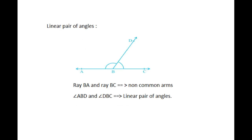Linear pair of angles: two angles form a linear pair if they have a common arm, a common vertex, their interiors do not overlap, and the sum of the two angles is 180 degrees. See in this figure. If the non-common arms BA and BC form a line, then angle ABD and angle DBC are called a linear pair of angles.